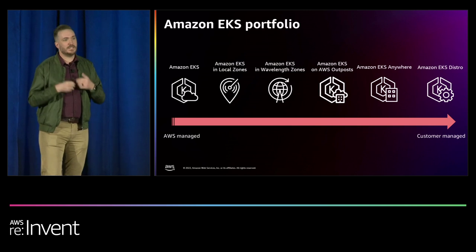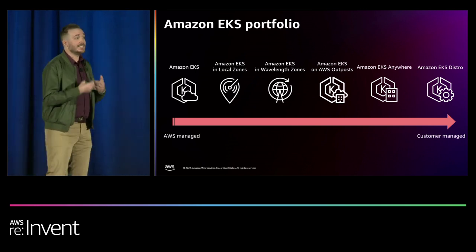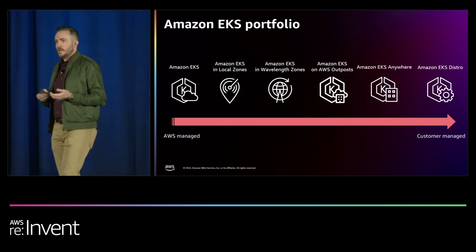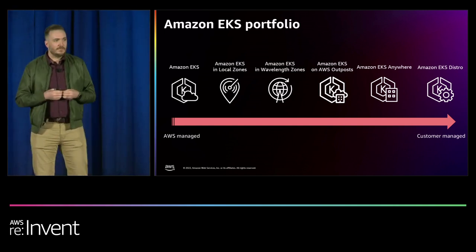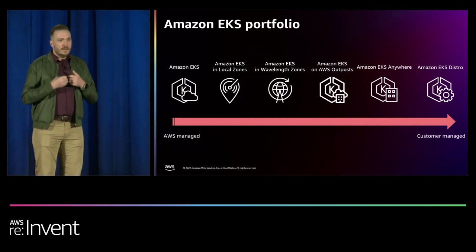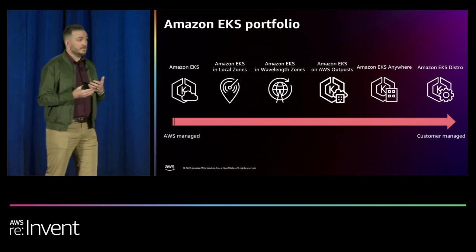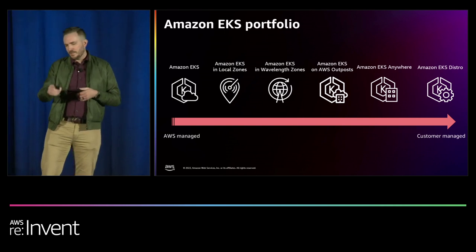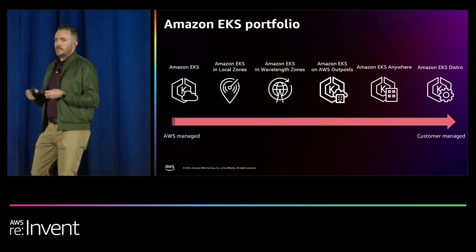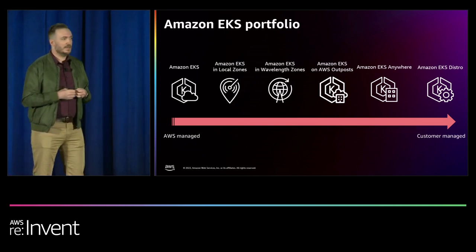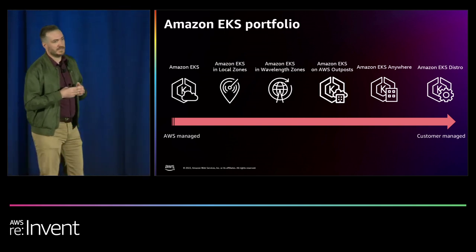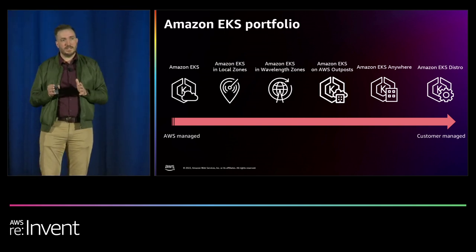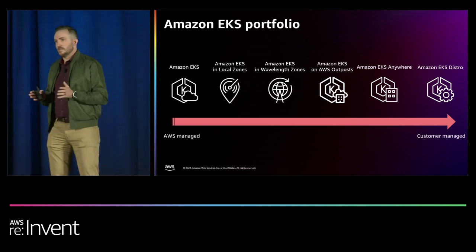When you go into your own data center, that's where EKS Anywhere comes into play. It's as consistent as possible with the region but it's not exactly the same product — it's an open-source product you can check out on GitHub. This is where EKS is meant to run on commodity hardware. When you can't run it on AWS hardware, that's where EKS Anywhere comes in. There's also a spot missing here — Snow devices, coming soon — you'll be able to run EKS Anywhere on Snow devices as well.